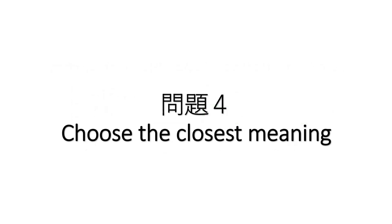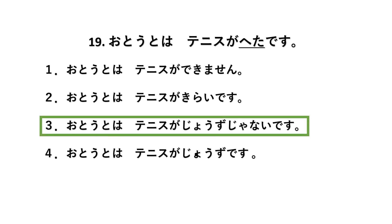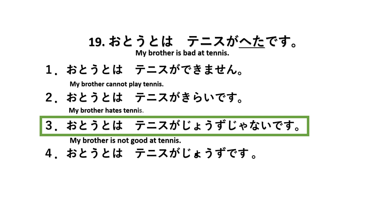Last part, Mondai Yon — choose the closest meaning of the given sentence. Number 19: Otouto wa tenisu ga heta desu. The sentence with the same meaning is number 3: Otouto wa tenisu ga jouzu janai desu. The original means my brother is bad at tennis; the correct option means my brother is not good at tennis. The other options mean brother cannot play tennis, brother hates tennis, or brother is good at tennis.